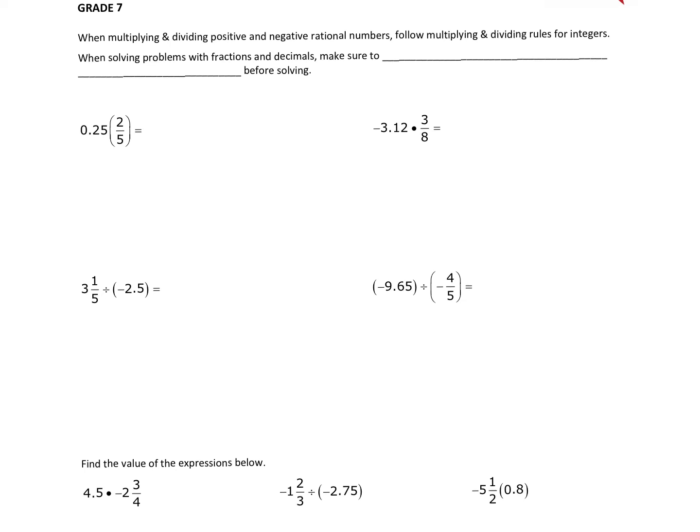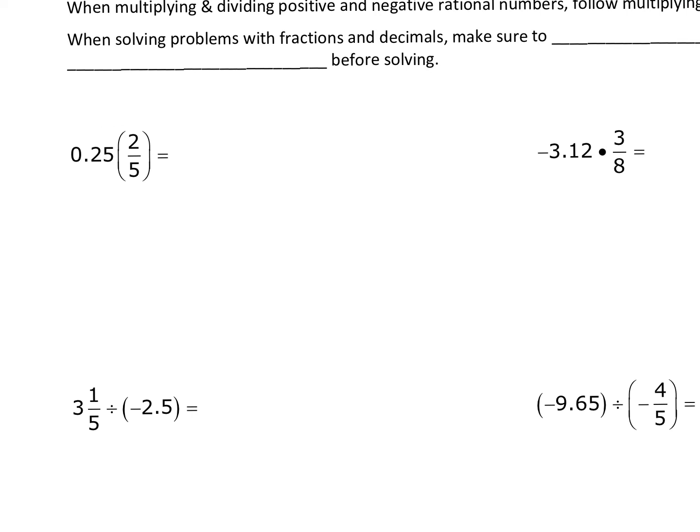In this video we are multiplying and dividing positive and negative rational numbers. Remember that rational numbers are fractions, so we're going to multiply fractions and decimals using the rules for multiplying and dividing integers — positive or negative. I want to pause this to give you a chance to write these down and see if you can work it out yourself.